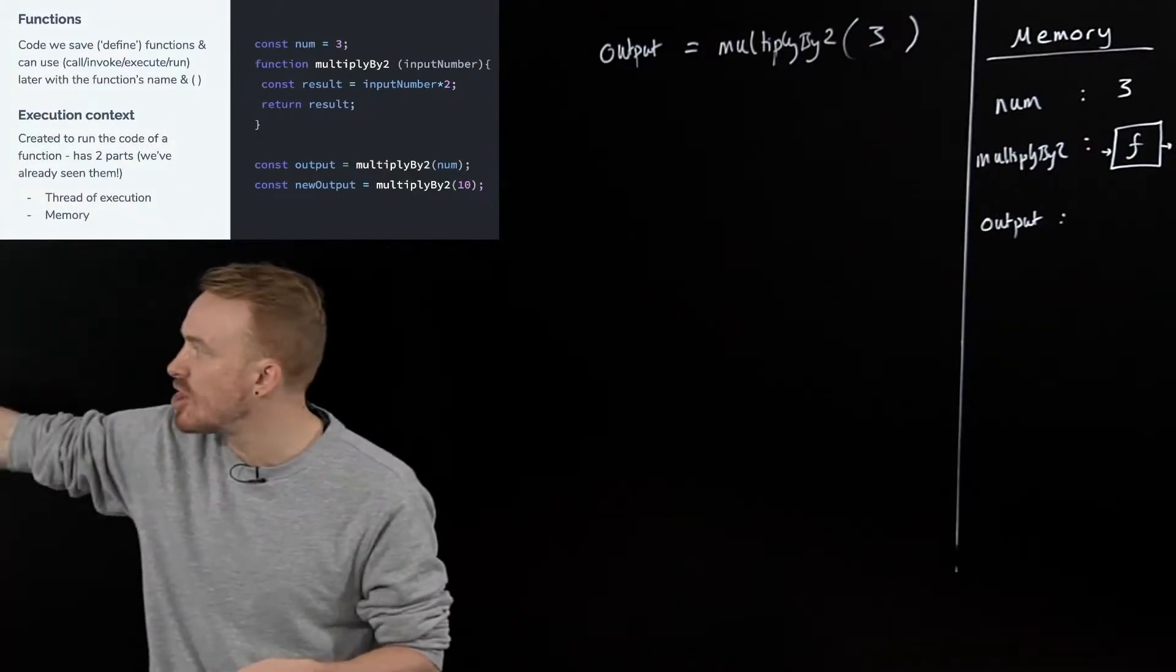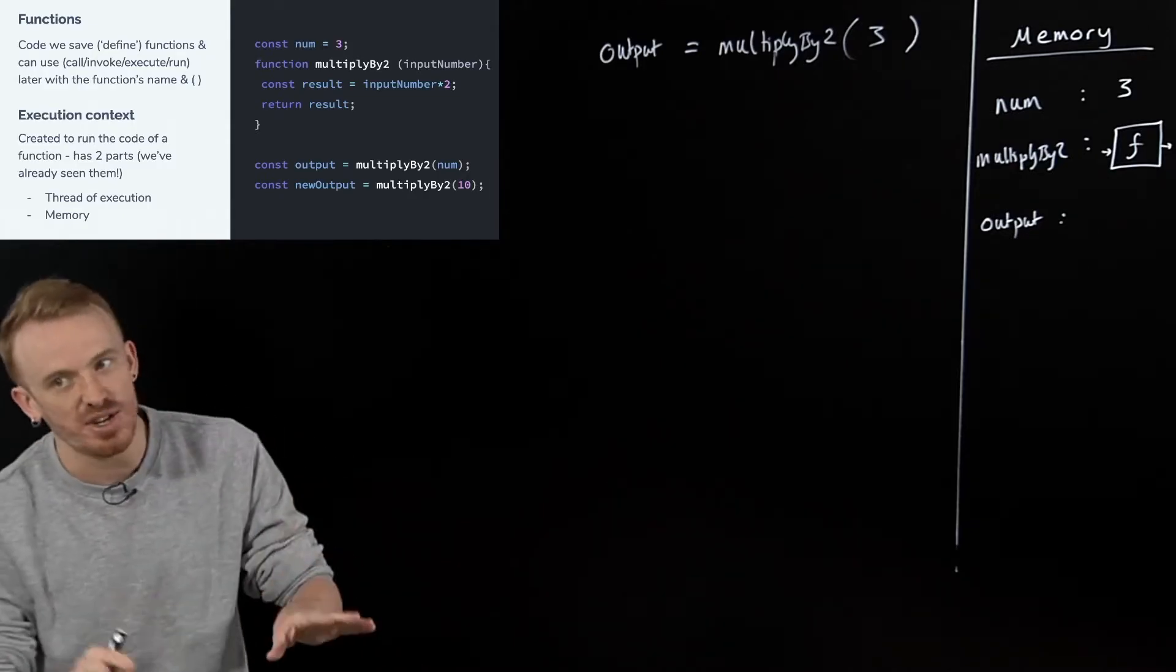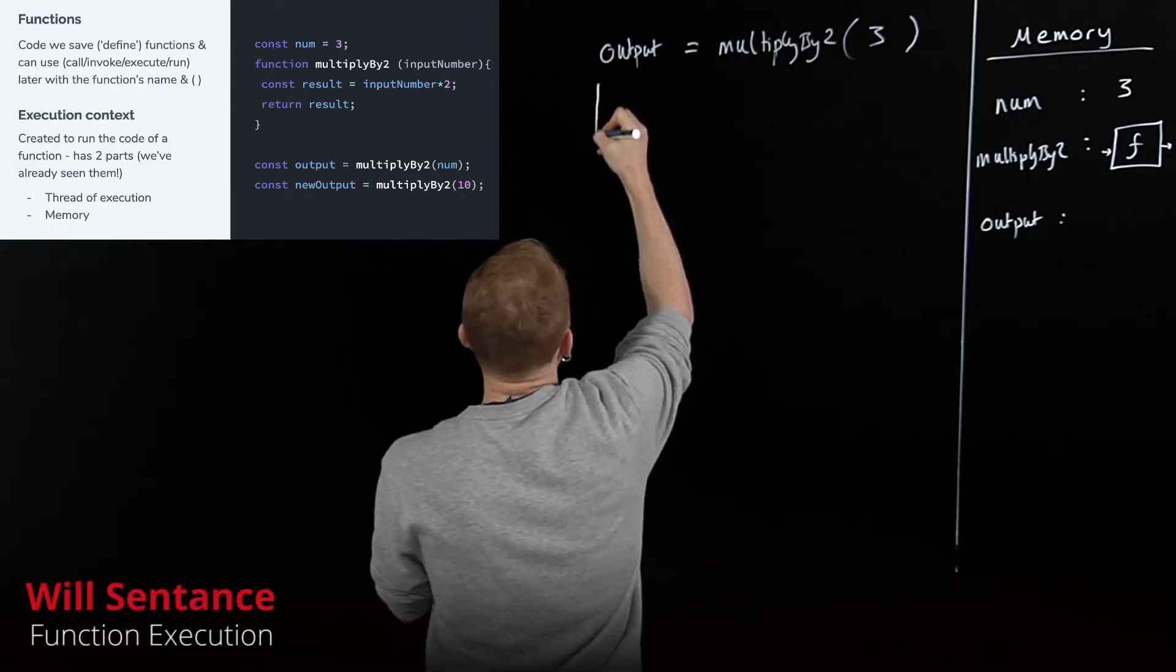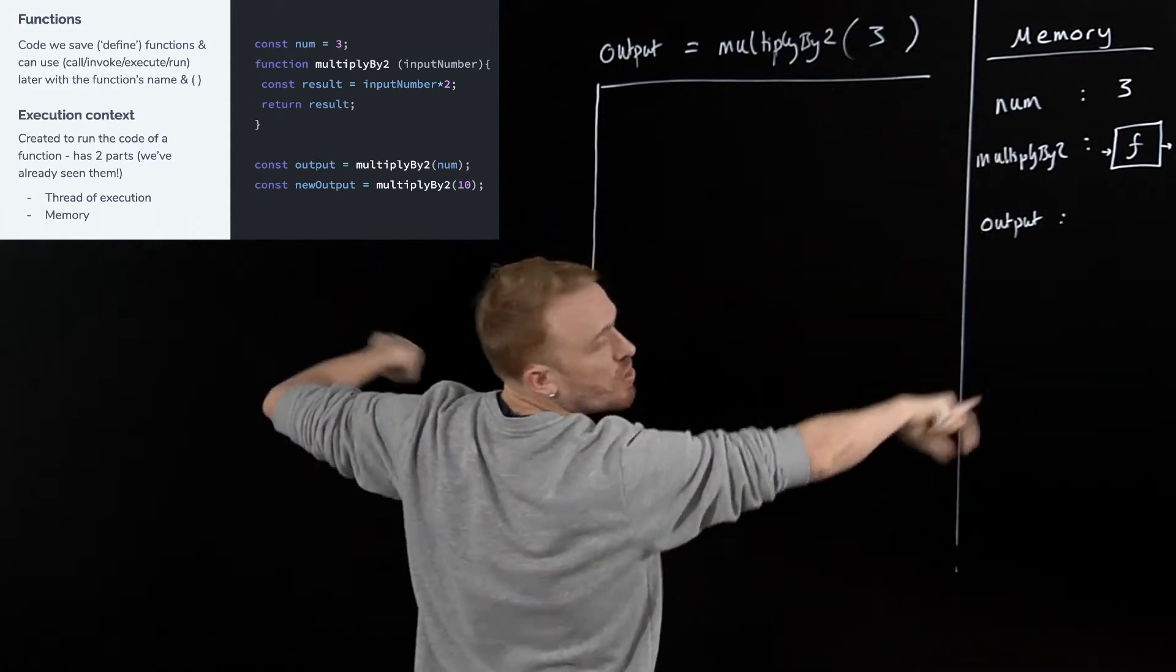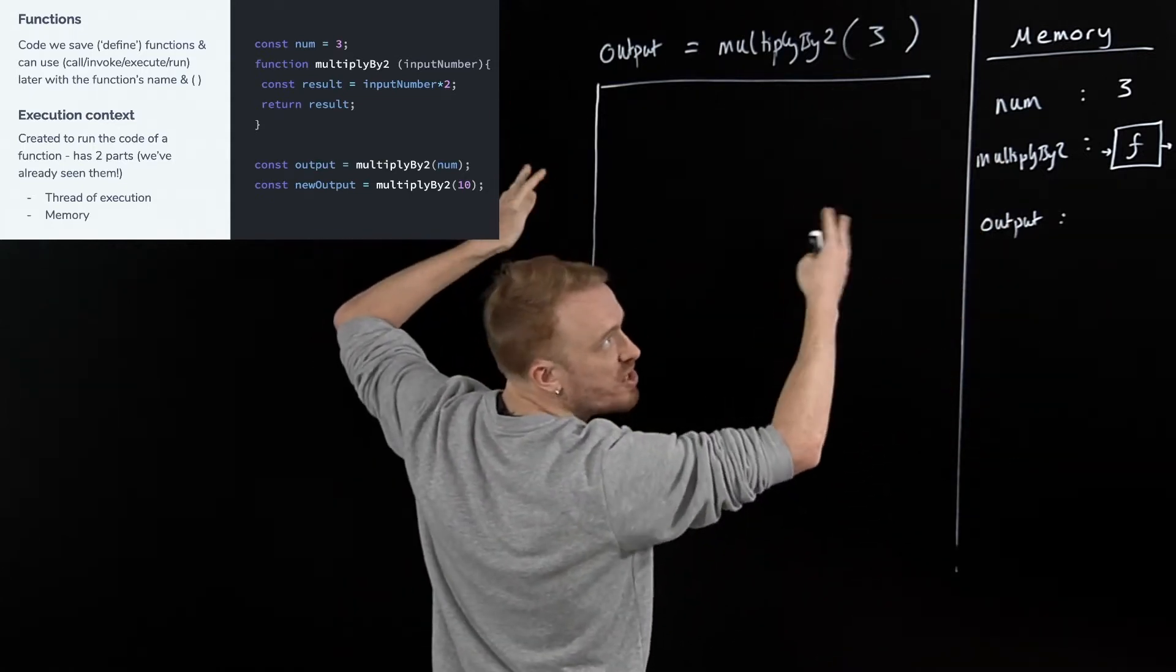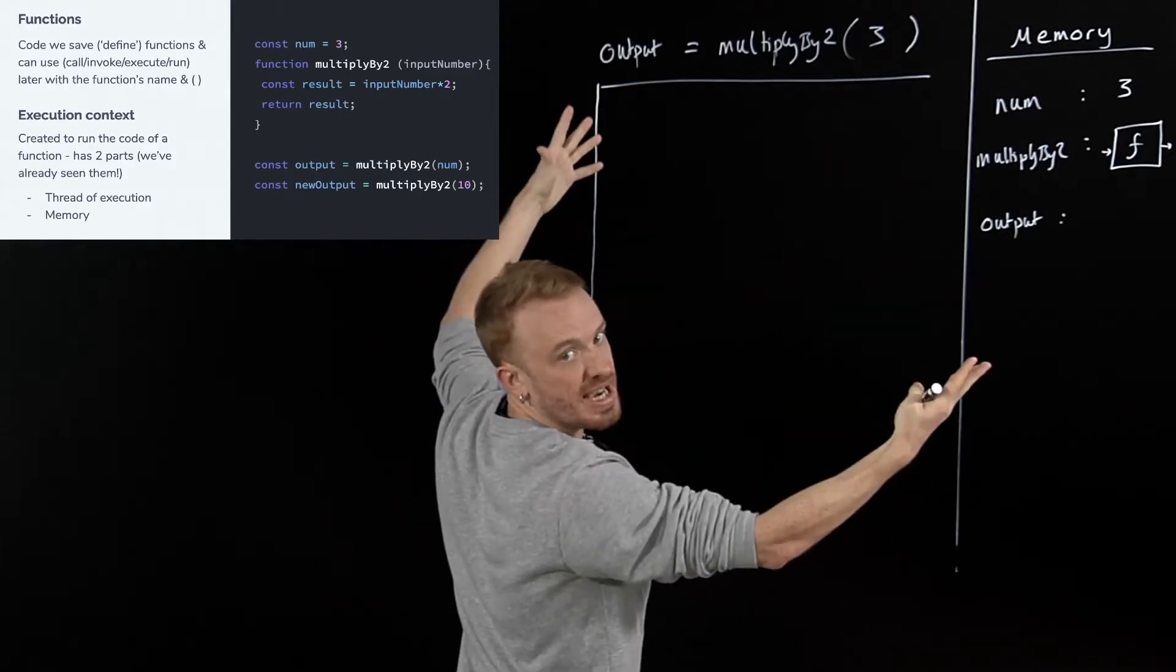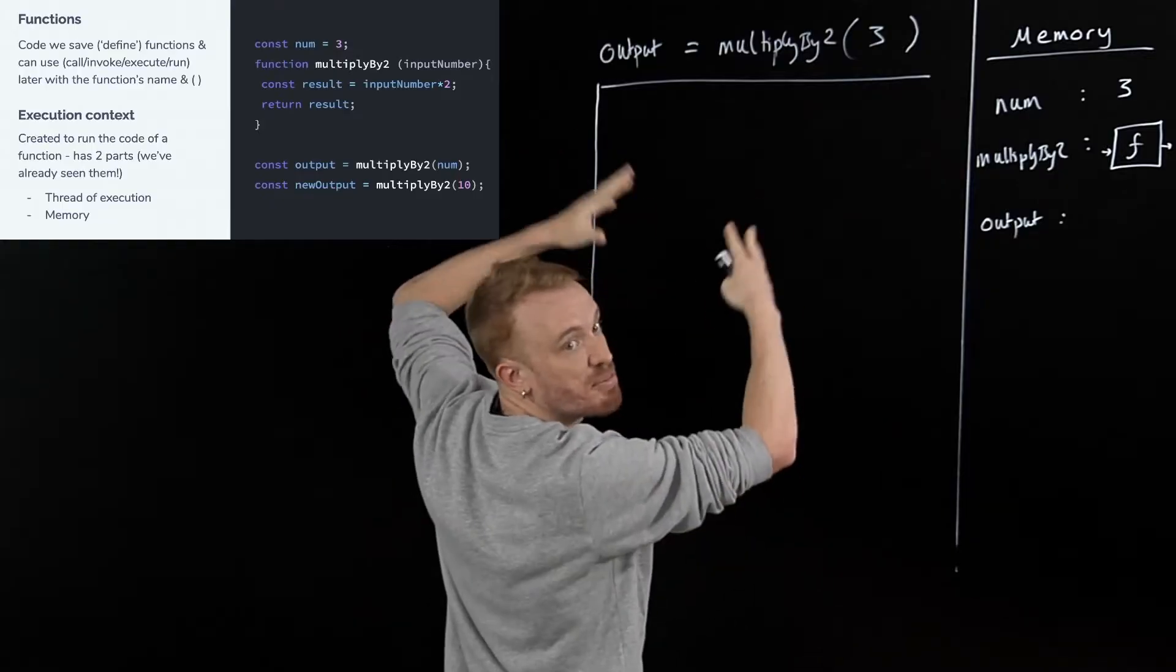For running multiply by two before we're able to move on to any further code, we're going to create a brand new execution context. Here it is. I'm going to draw the big box. This is what it is. We've already seen one. This was the big one, called the global one. This is the one that as soon as we start running our file of code, we create what's called a global execution context for running the overall file of code. I think of it as the main program.